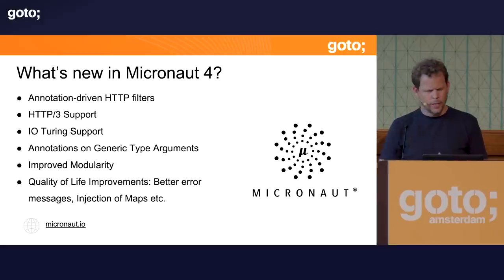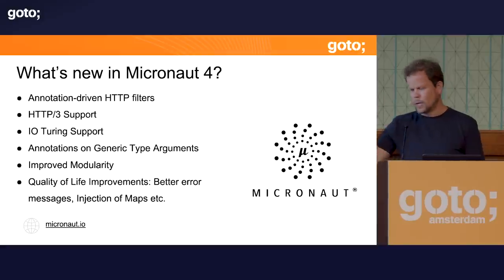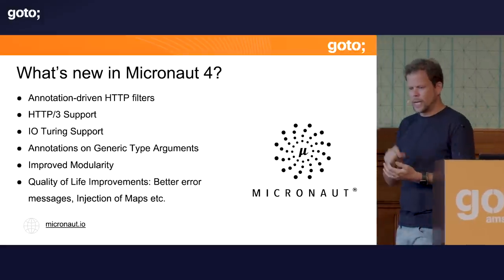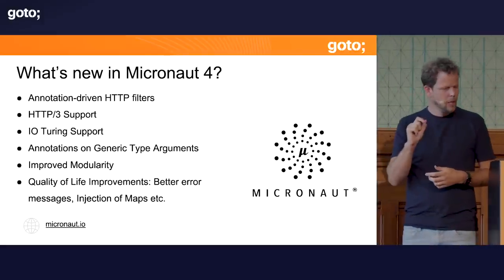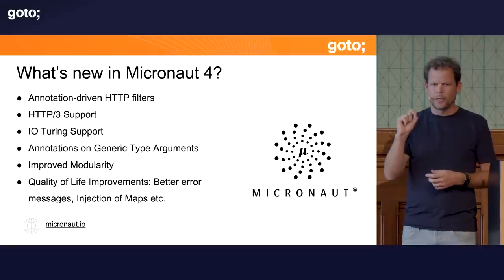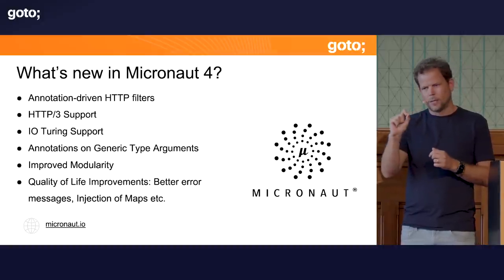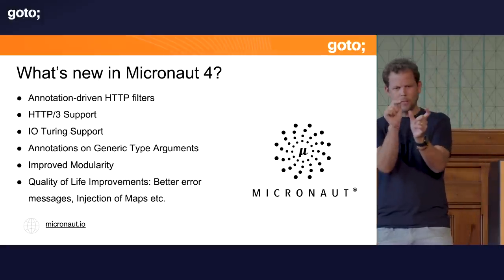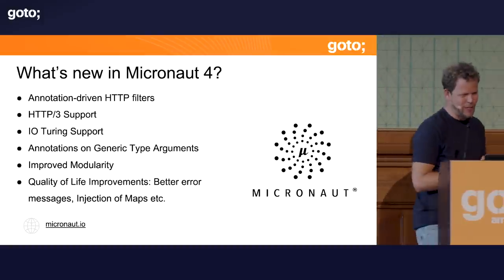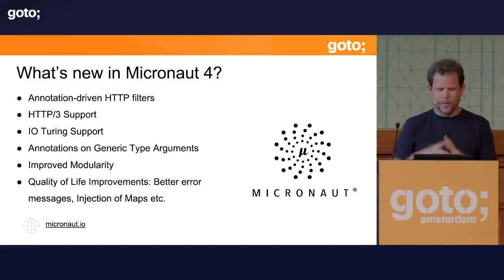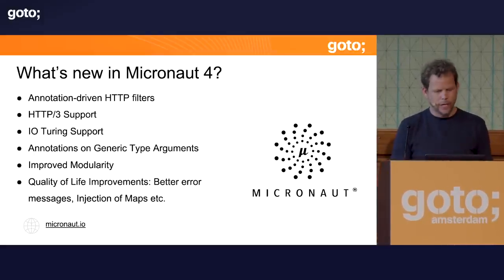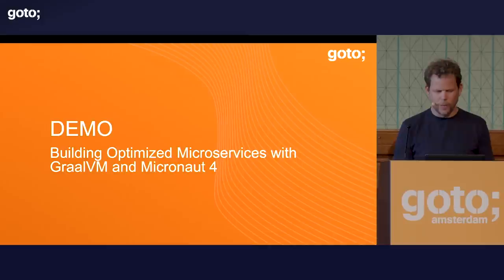We also have experimental support for newer technologies like HTTP/3. At the compiler level, we've allowed annotations on generic type arguments, which is really nice — for example, you can declare validation annotations on generic type arguments, so you can have something like List<@NotBlank String>. We've also improved modularity and added lots of quality-of-life improvements: better error messages, injection of maps, and overall the framework is just better.